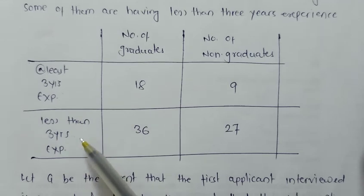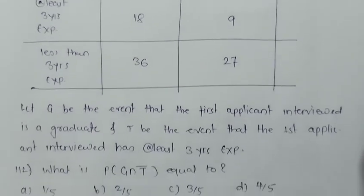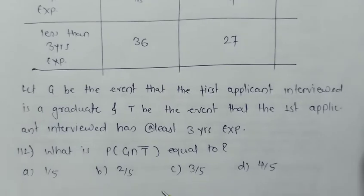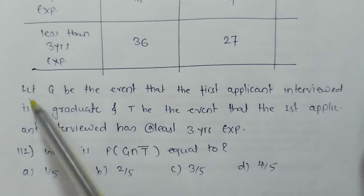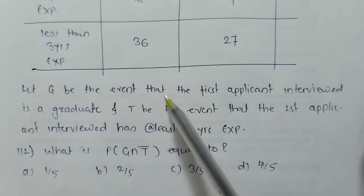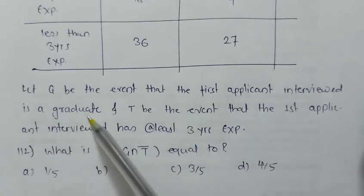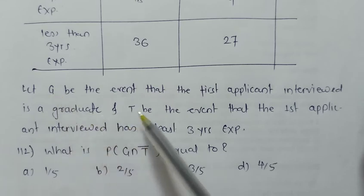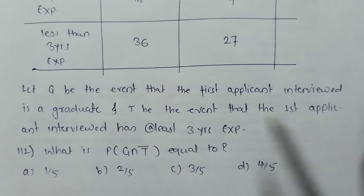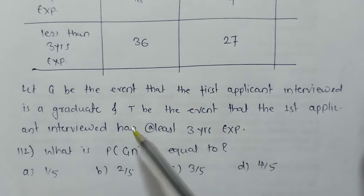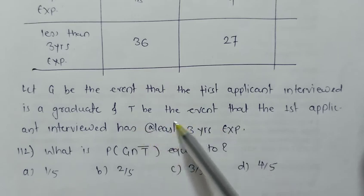Based on this, we have to solve the following three questions, and in those questions we have two symbols: G and T. These are the two events. Let G be the event that the first applicant interviewed is a graduate, and T be the event that the first applicant interviewed has at least three years experience.